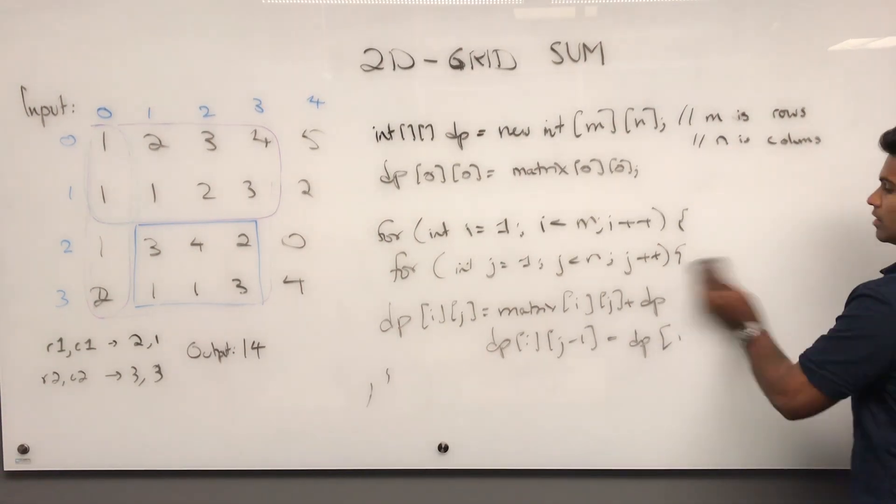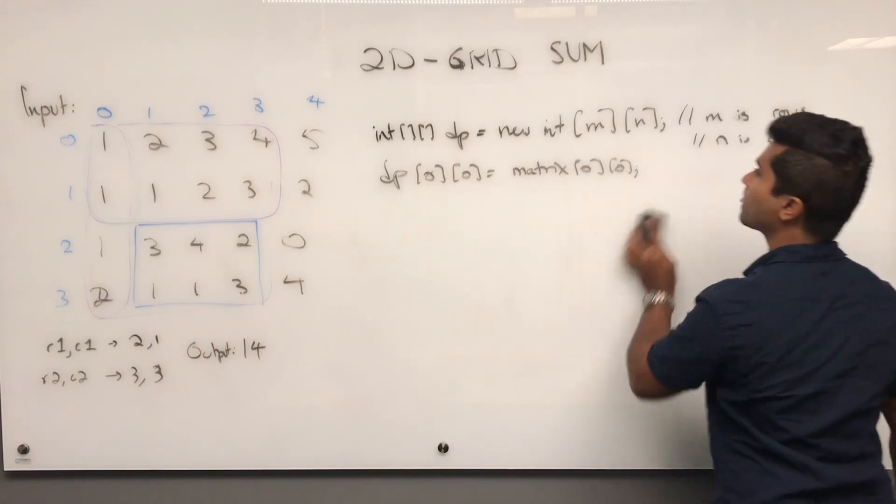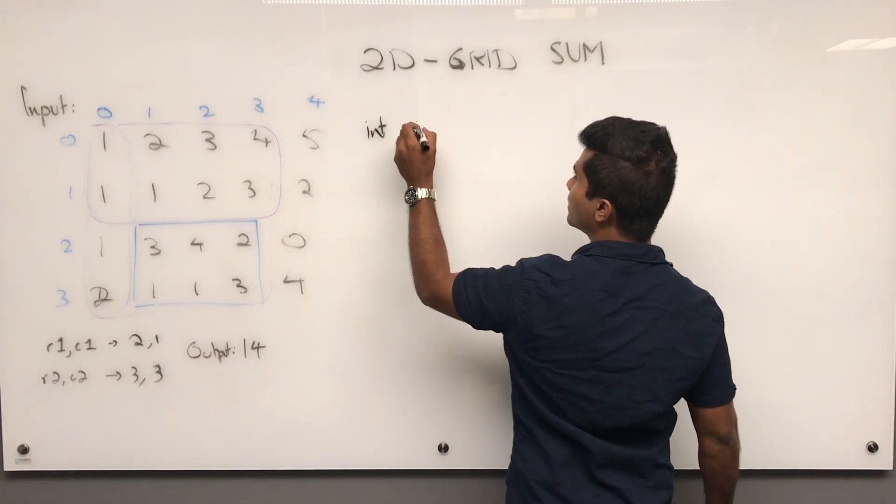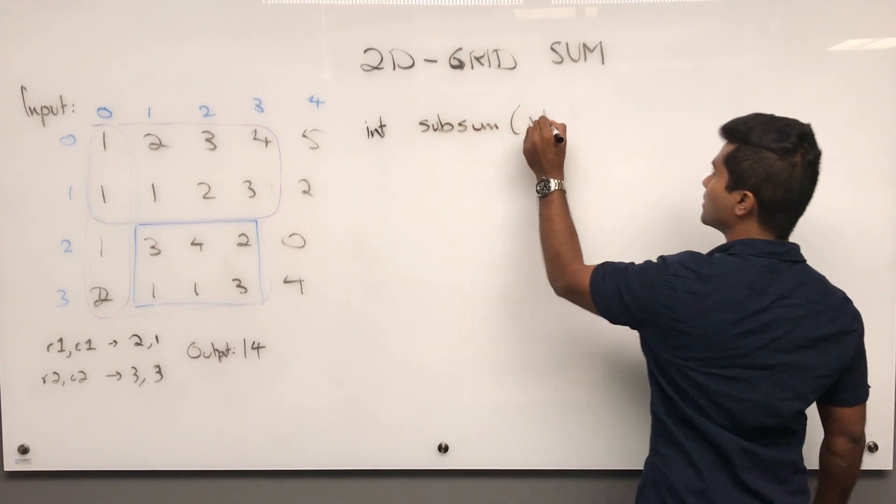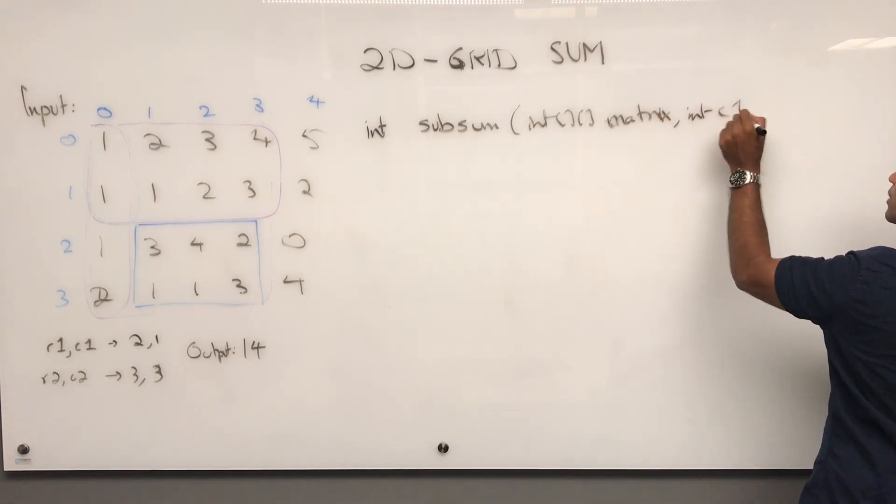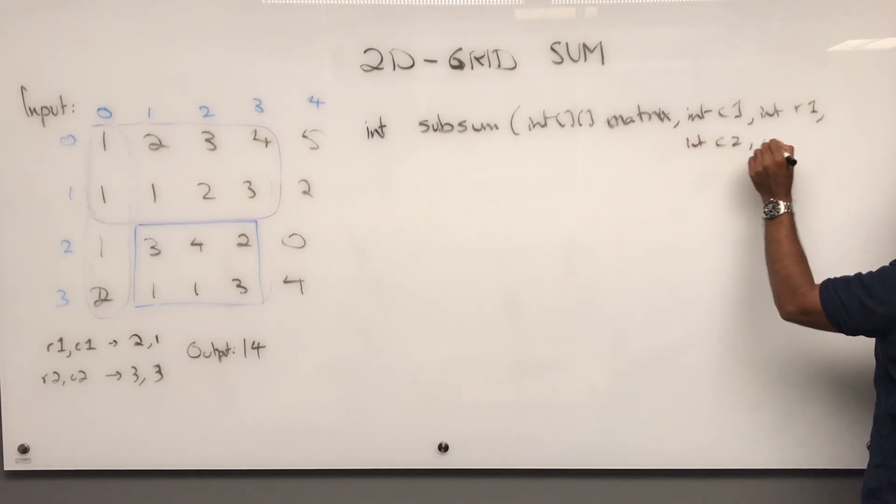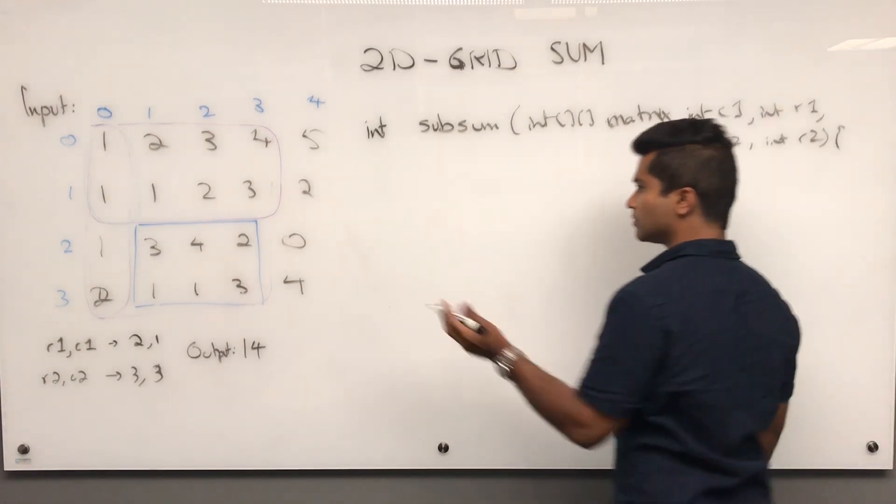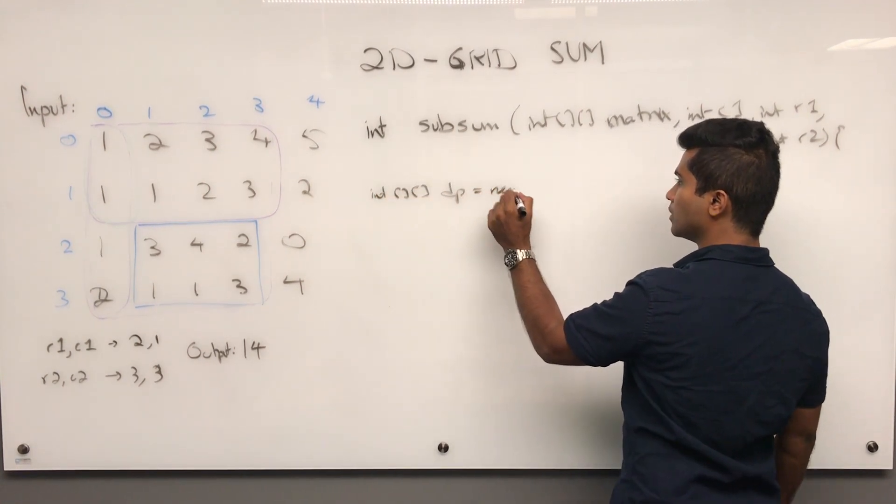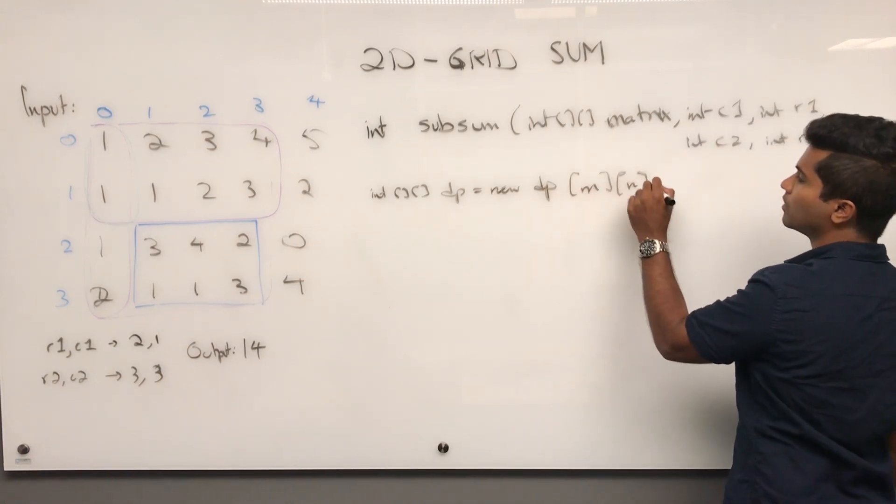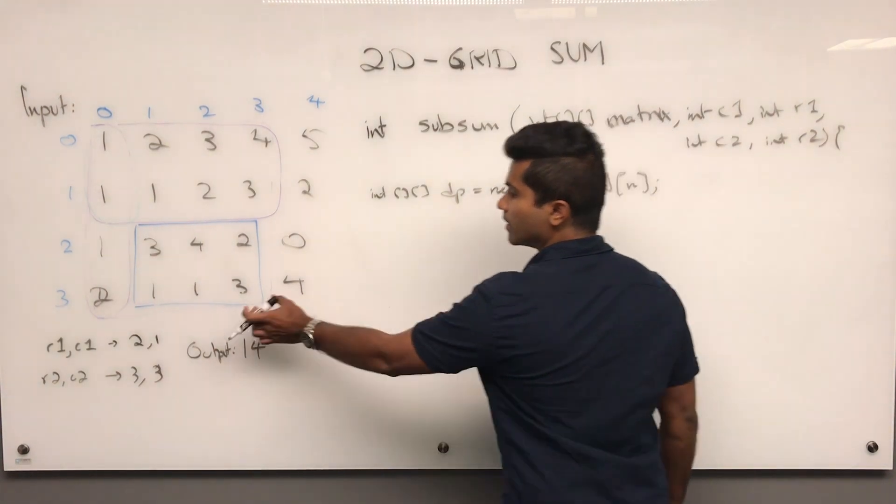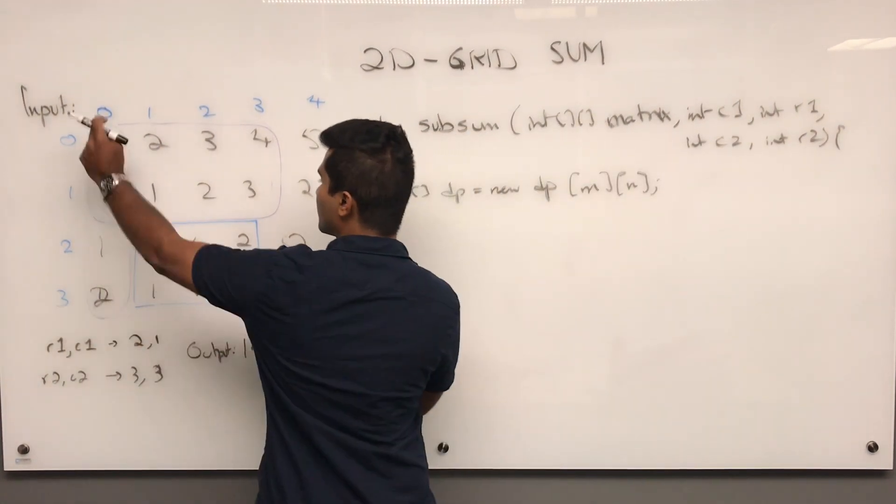Now that this is here, we can go to our final part. So let's say int subsum. And they give us a grid, say matrix, and then int c1, int r1, int c2, int r2. Once they do that, we populate our DP like I showed you. So at this point the code I wrote earlier, the DP is already populated.